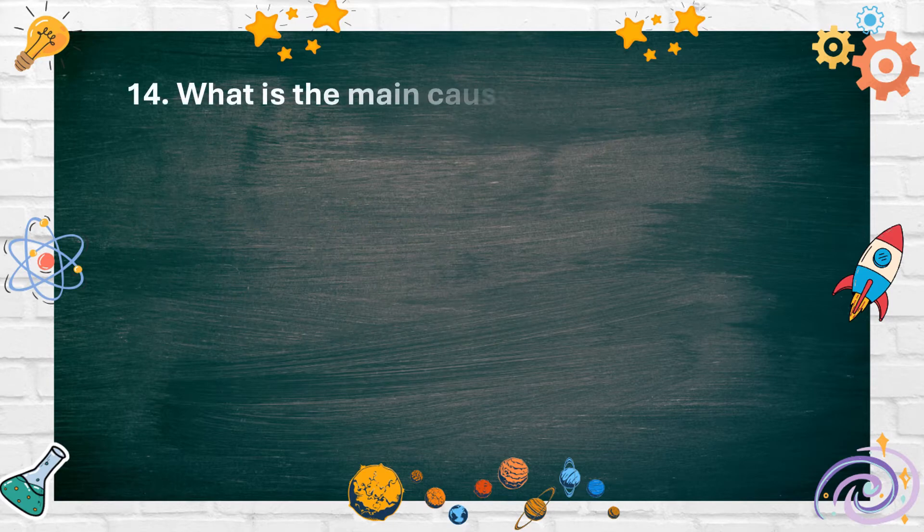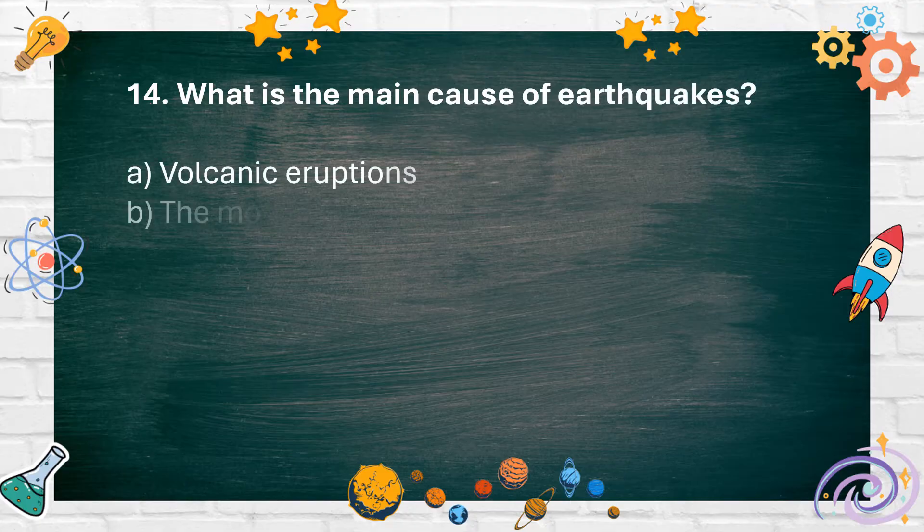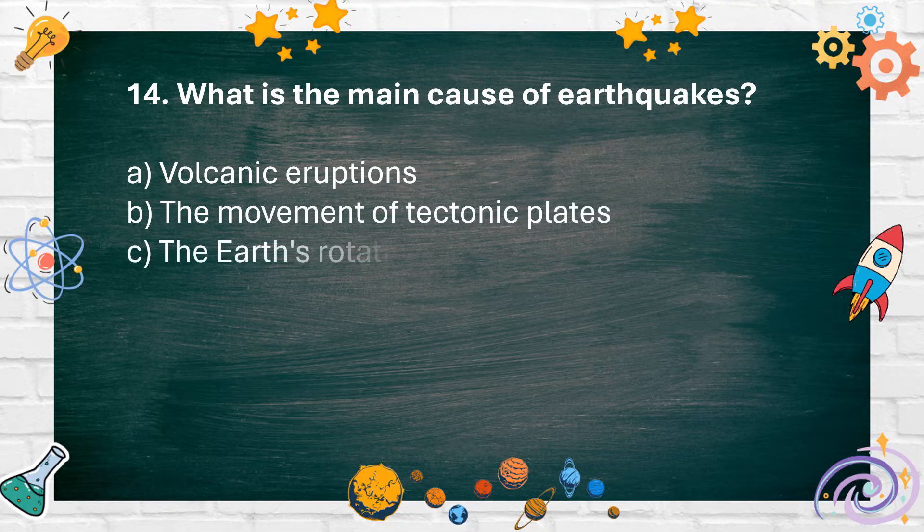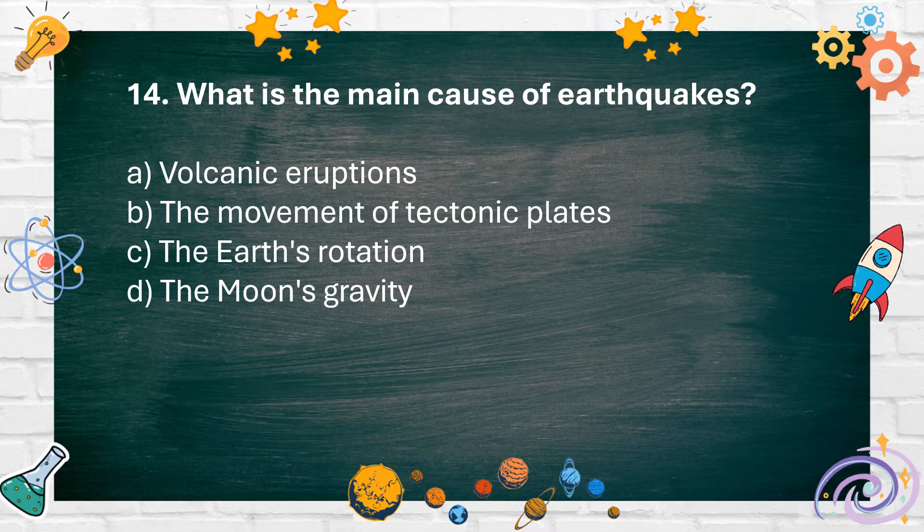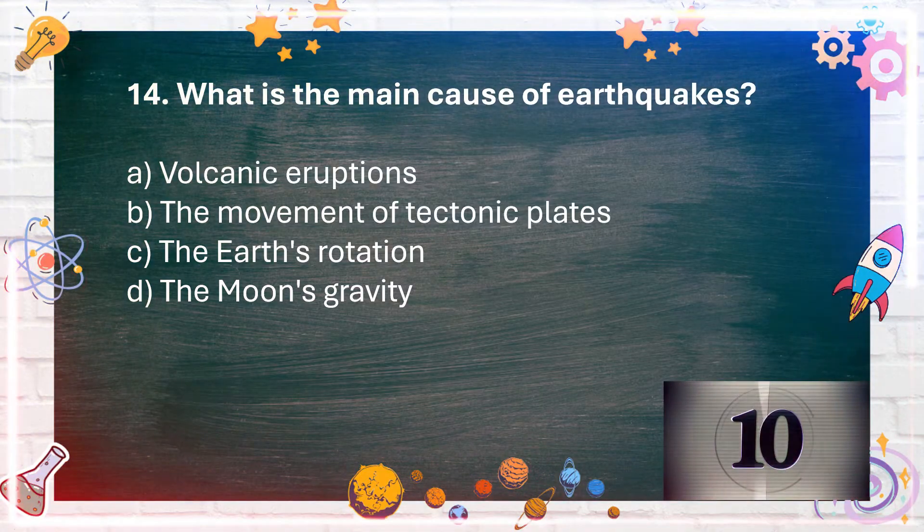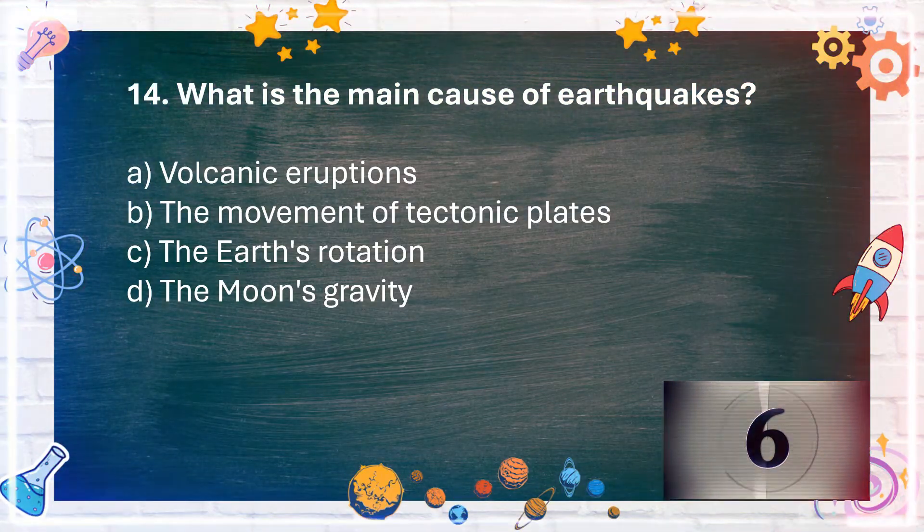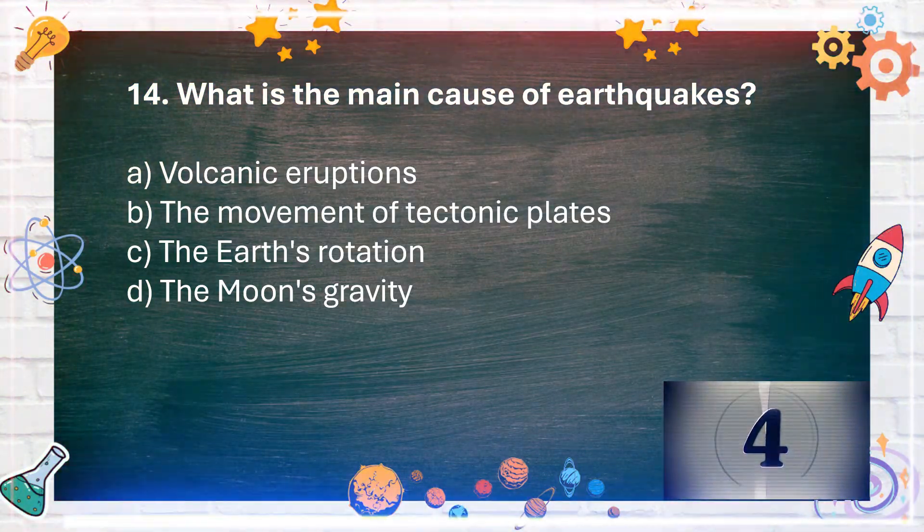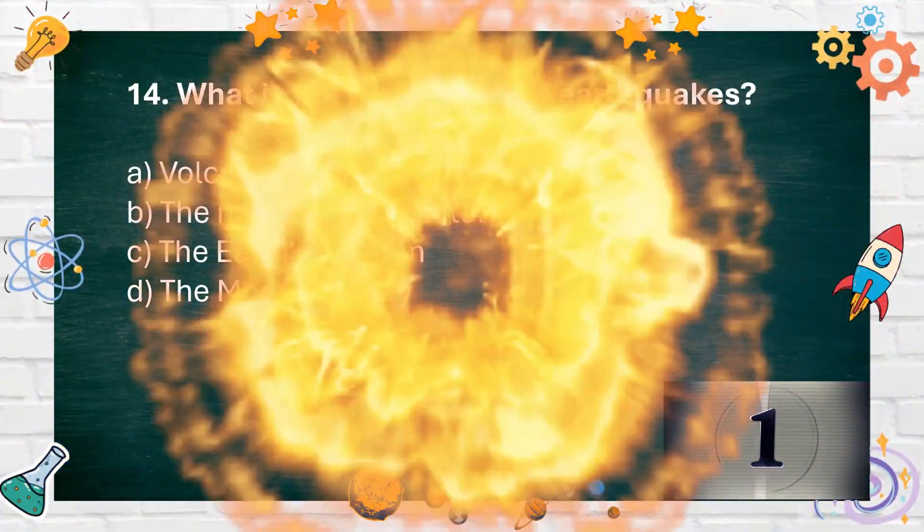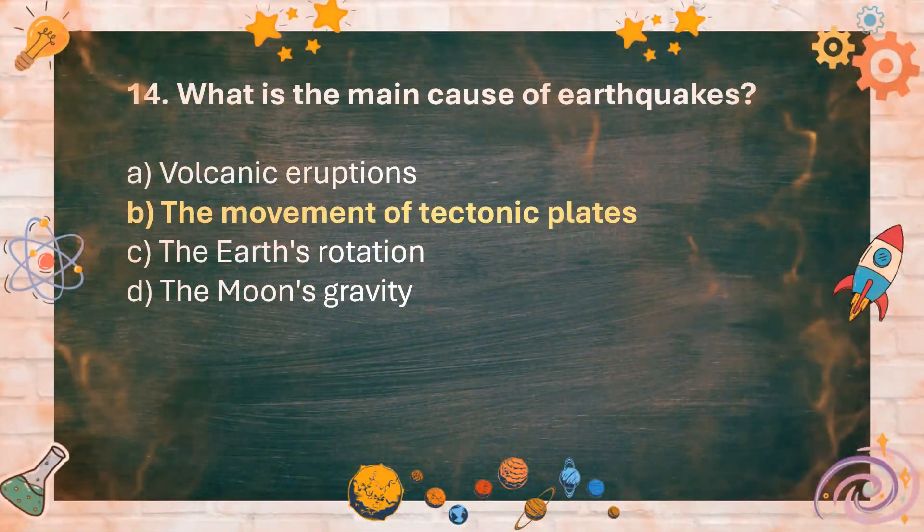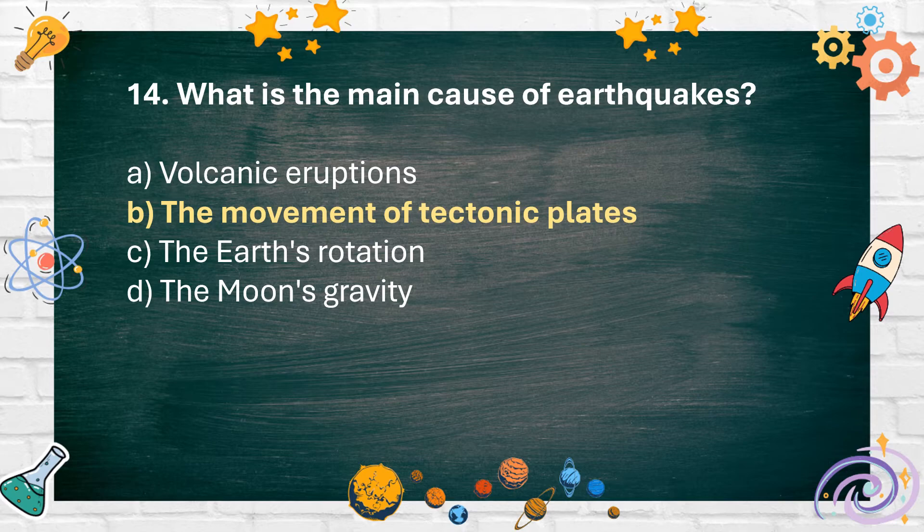Number 14: What is the main cause of earthquakes? A. Volcanic eruptions, B. The Movement of Tectonic Plates, C. The Earth's Rotation, D. The Moon's Gravity. The answer is B. The Movement of Tectonic Plates.